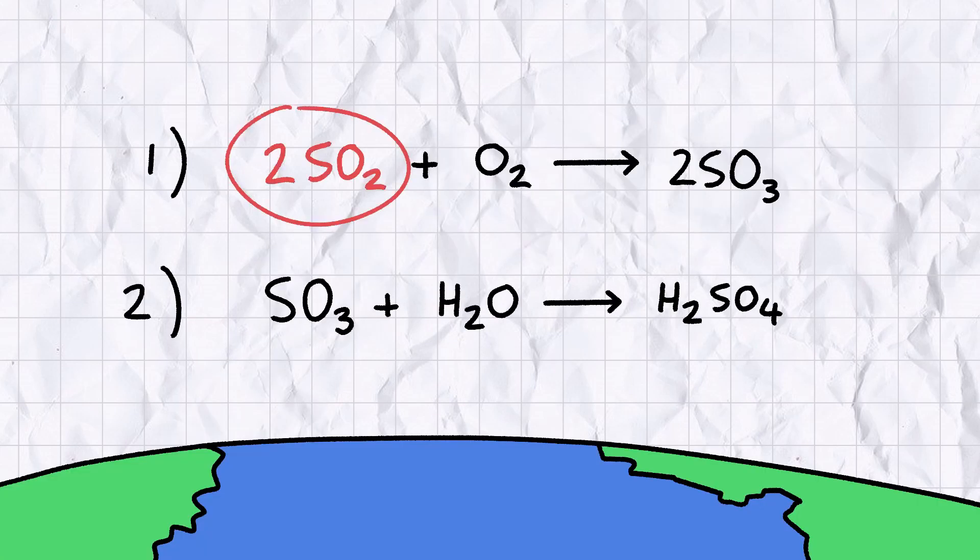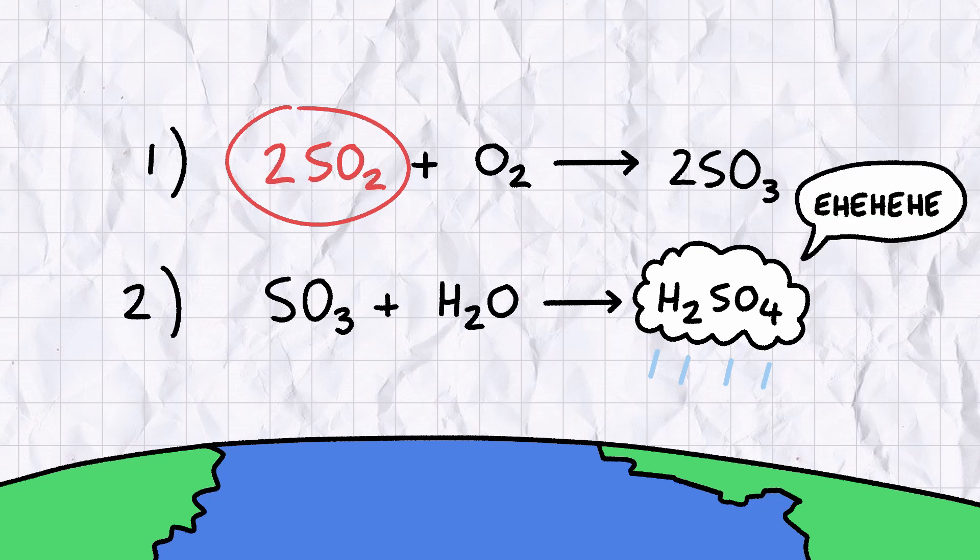Incidentally, you remember sulphur dioxide? Well, one of the main reasons it's so bad for the environment is it reacts with water vapour in the air to make acid rain, droplets of dilute sulphuric acid that rain down from the heavens to cause all sorts of environmental horrors, namely eroding limestone buildings and killing plants by reacting with nutrients in the soil.